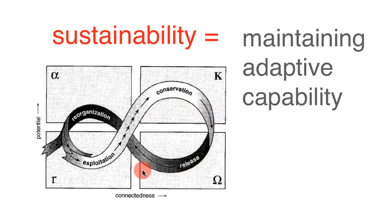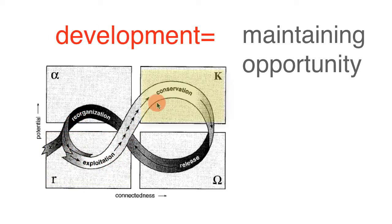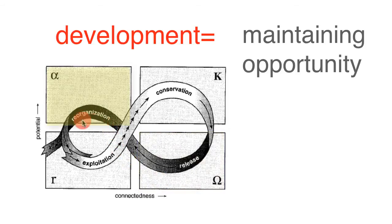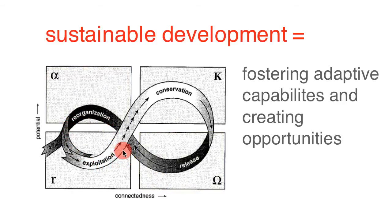In this model, sustainability consists of the capacity to create, test, and maintain adaptive capability. Development is the process of creating, testing, and maintaining opportunity. Therefore, sustainable development thus refers to the goal of fostering adaptive capabilities and creating opportunities.